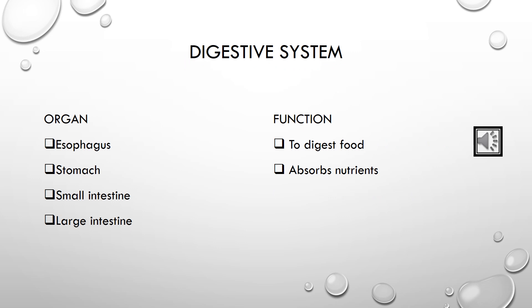The digestive system is the system used in the human body for the process of digestion. Digestion involves the breakdown of food into a soluble and simpler form. The main organs are the esophagus, stomach, small and large intestine, and its function is to digest and absorb nutrients.